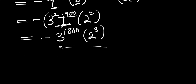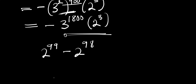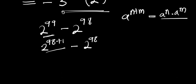Now let's consider a similar problem: 2 to the power of 99 minus 2 to the power of 98. We use the same approach — rewrite 99 as 98 plus 1, so we have 2 to the power of 98 plus 1 minus 2 to the power of 98. Applying the identity a to the power of n plus m equals a to the power of n times a to the power of m, we get 2 to the power of 98 times 2 to the power of 1, minus 2 to the power of 98.